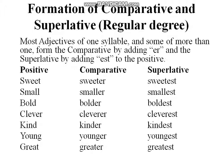For example: 'sweet' becomes 'sweeter' (comparative) and 'sweetest' (superlative). 'Small', 'smaller', 'smallest'. 'Bold', 'bolder', 'boldest'. 'Clever', 'cleverer', 'cleverest'. 'Kind', 'kinder', 'kindest'. 'Young', 'younger', 'youngest'. 'Great', 'greater', 'greatest'. These are all regular degrees — the positive is repeated and we just add '-er' for comparative and '-est' for superlative.